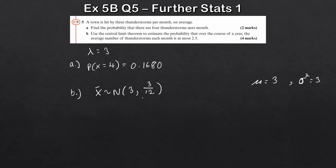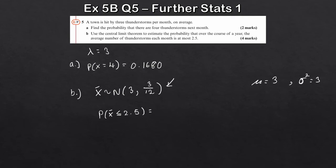We want to estimate the probability that the average number of thunderstorms per month is at most 2.5, so P(X̄ ≤ 2.5). Plugging the values into your graphical calculator with this distribution, you get 0.159 to three significant figures. It's a really nice chapter and very fundamental for further stats and university-level statistics.